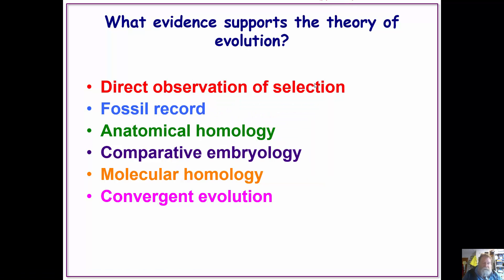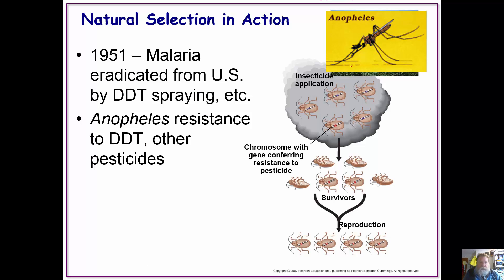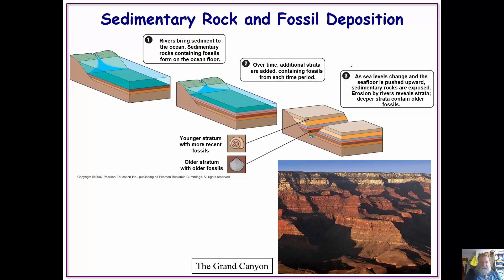We have a number of different things that prove evolution is ongoing: direct observation of selection, the fossil record, anatomical homology, comparative embryology, molecular homology, and convergent evolution. We see natural selection in action all the time — microorganisms becoming resistant to antibiotics is an example, and malaria-transmitting mosquitoes becoming resistant to DDT is another example.